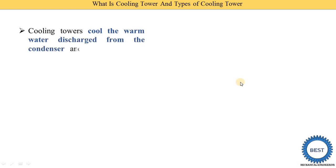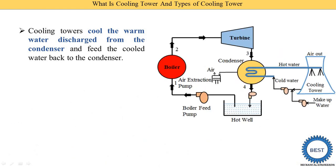The cooling tower cools the warm water discharged from the condenser and feeds the cool water back to the condensers. Here you see the diagram of a thermal power plant for a Rankine cycle. This part is the condenser — in the condenser, steam from the turbine is supplied and we convert this steam.